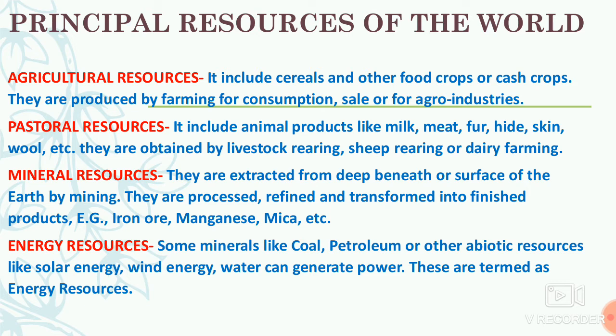Pastoral resources include animal products like meat, milk, fur, hide, skin, and wool, all obtained by livestock rearing. Livestock means cattle is being reared and we obtain these things from them. This also includes sheep rearing and dairy farming, from which we obtain milk, meat, fur, hide, skin, and wool.